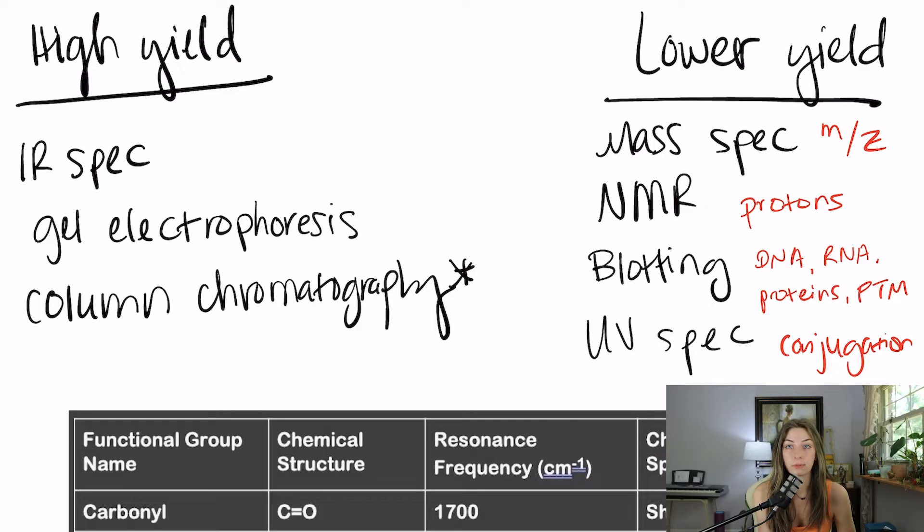I still recommend that you know the low yield ones. I would say even the low yield ones, like blotting and UV spec, are not uncommonly tested. I would say they're more like mid yield or something. What you need to know about the lower yield ones is that mass spec separates things based on their mass to charge ratio.